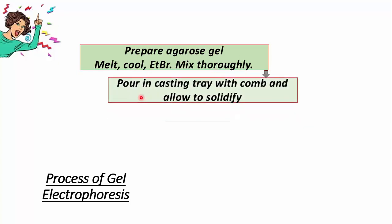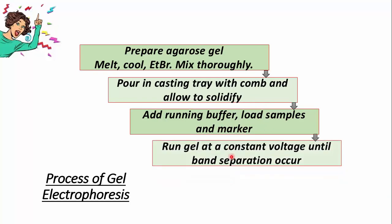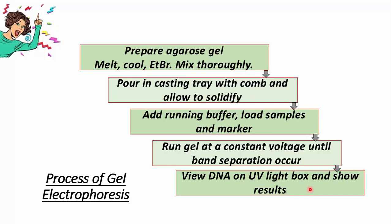Then we pour the agarose solution into the casting tray with the comb and allow it to solidify. After solidification, we remove the comb and add running buffer. We load the DNA marker and our DNA samples, then run the gel at a constant voltage until band separation occurs. Finally, we visualize the DNA on a UV light box to show the results.